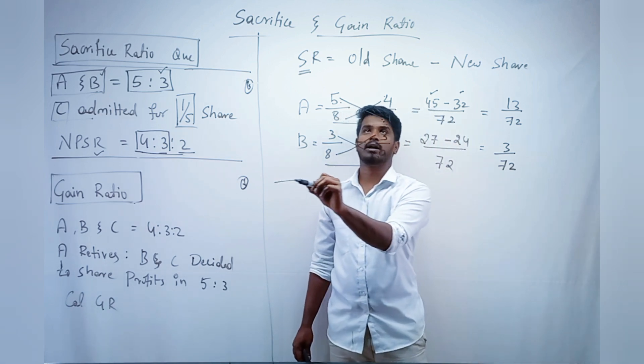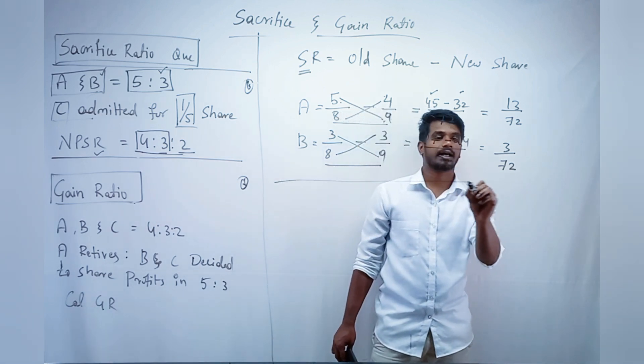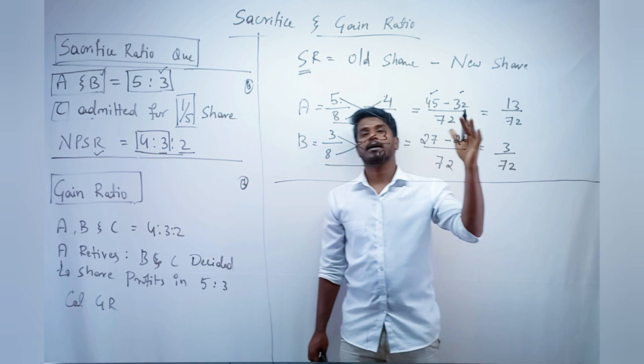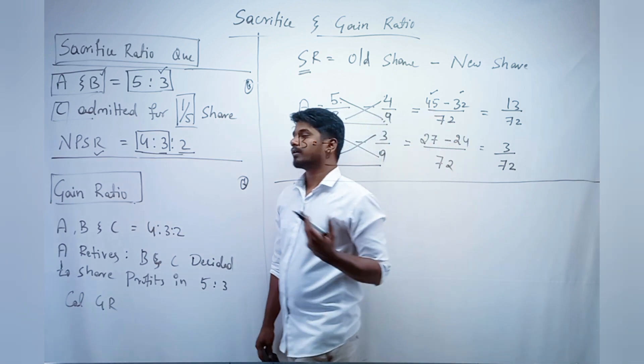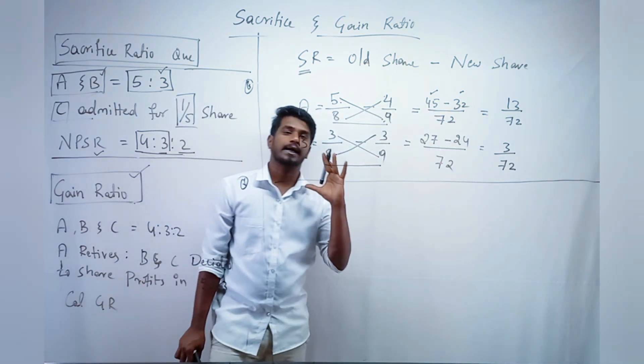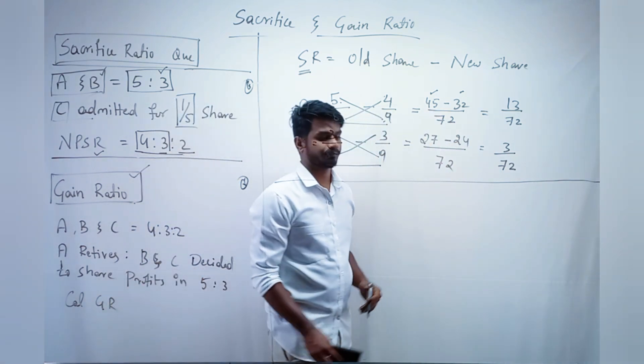So the sacrifice ratio for A is 13/72 and for B is 3/72. This completes the sacrifice ratio. Now let us move towards the gain ratio.